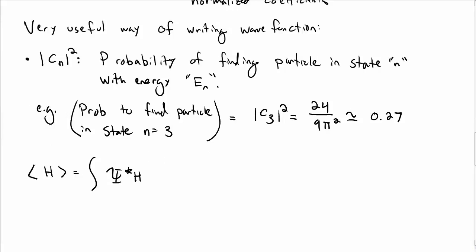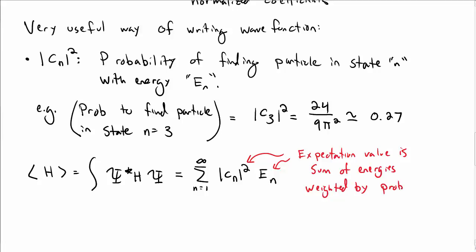The expectation value of the Hamiltonian, which is psi star H psi integrated over dx, I can now write as the sum from n equal to 1 to infinity of the absolute value of cn squared e sub n. So again, this expectation value of the Hamiltonian is the sum of the energies, but it's weighted by the probability of finding the particle in that particular state, which is the absolute value of the c sub ns, which is a useful way of thinking about these coefficients.